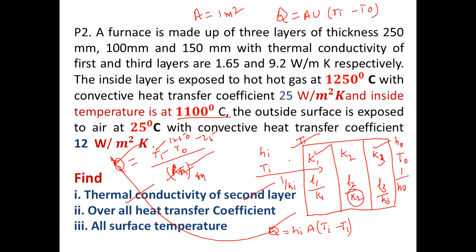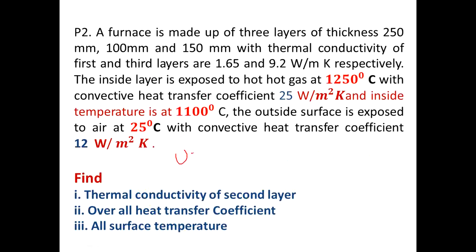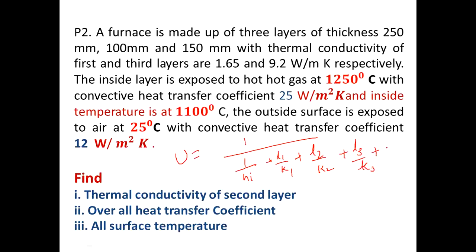For the overall heat transfer coefficient, you can find it from the formula: Q equals A into U into (TI minus T0). Alternatively, U is equal to 1 divided by [1/HI + L1/K1 + L2/K2 + L3/K3 + 1/H0]. This is the overall heat transfer coefficient. It is a very simple problem.